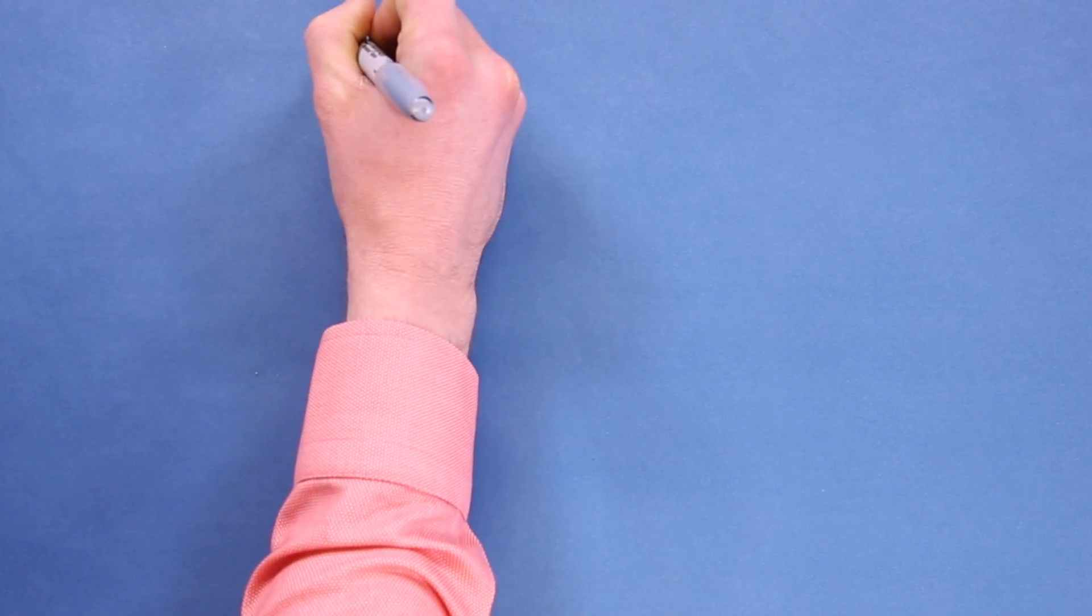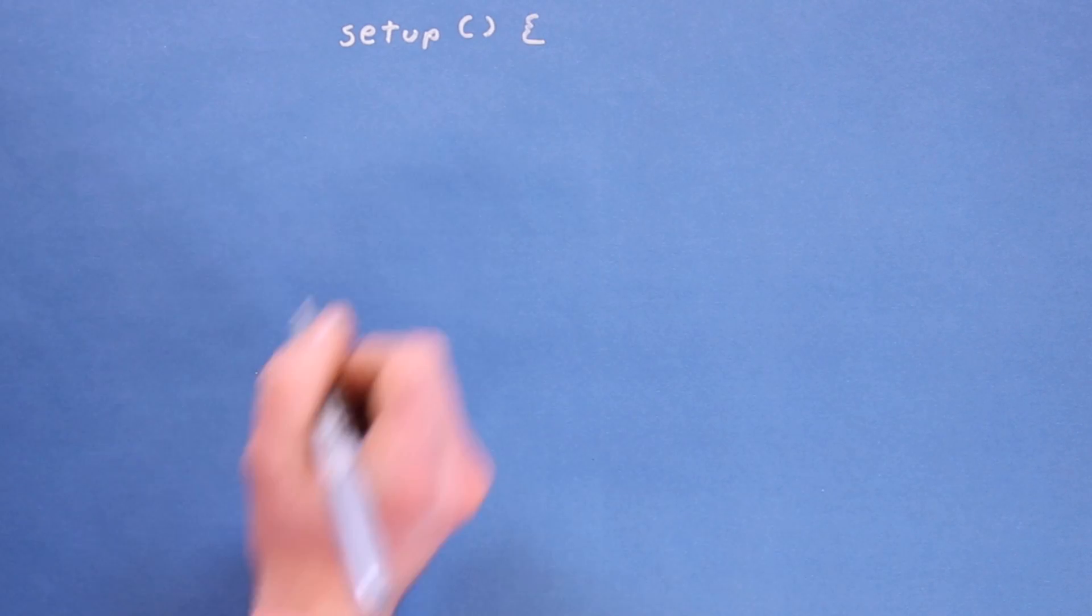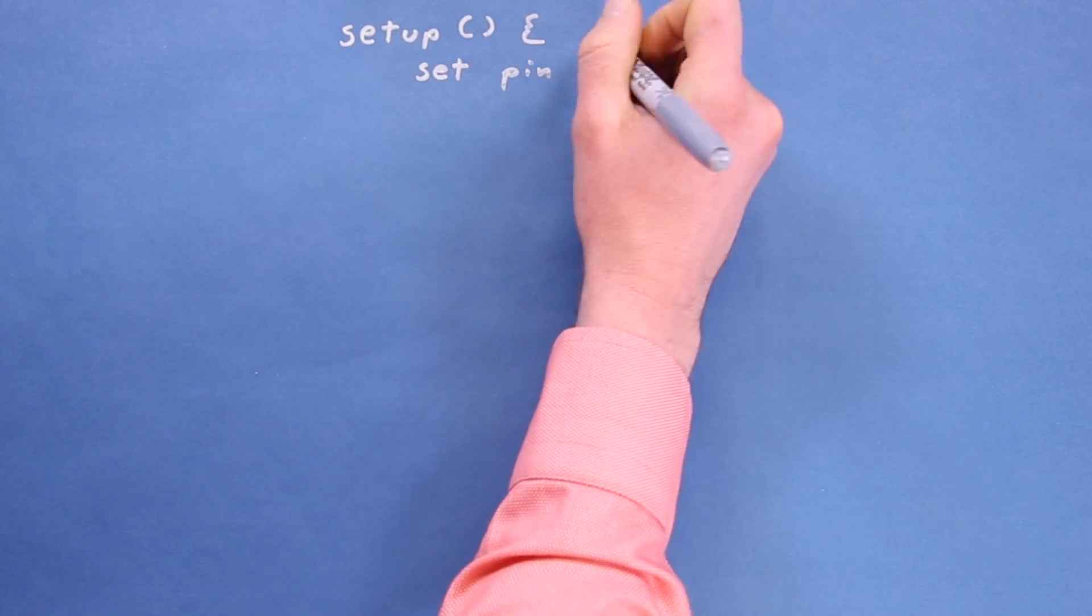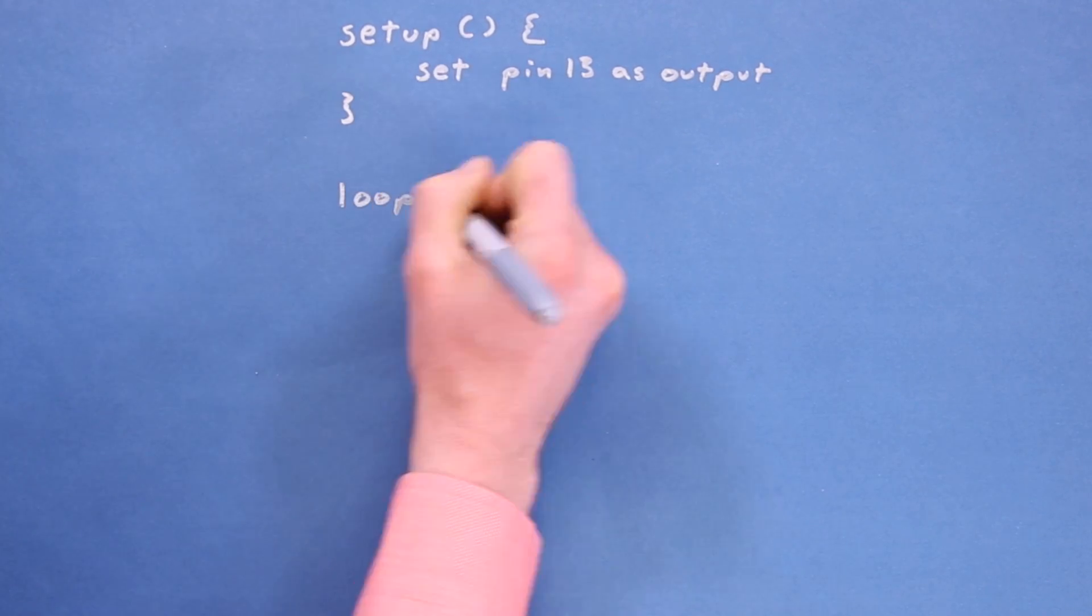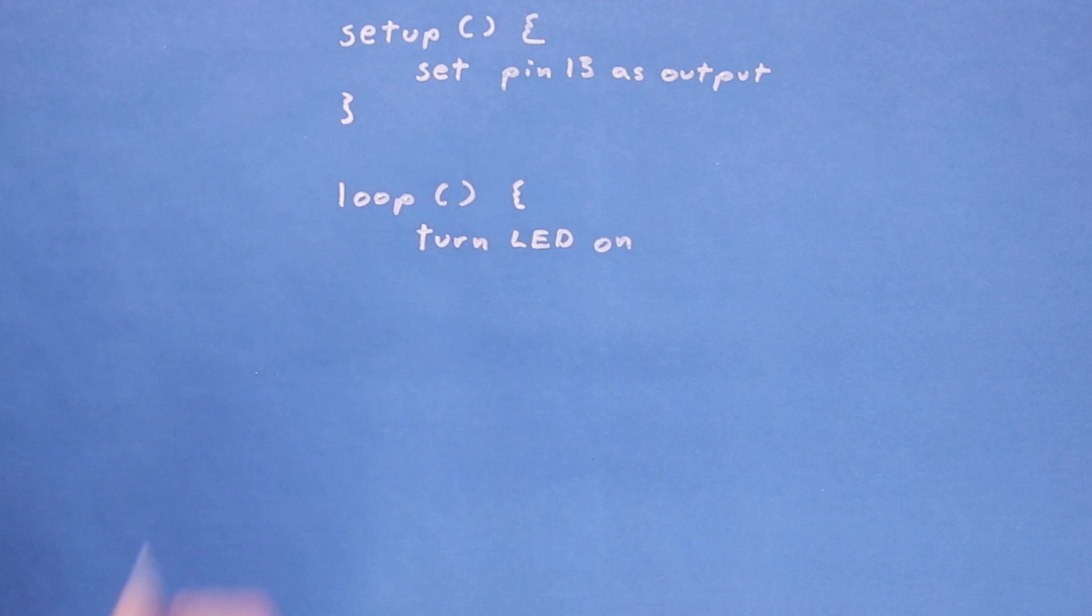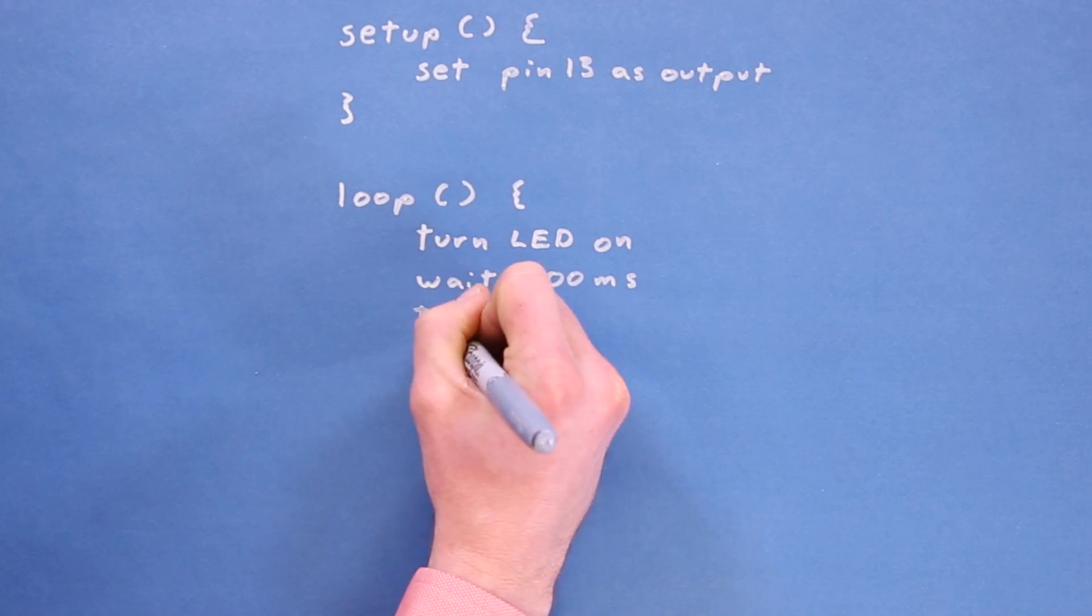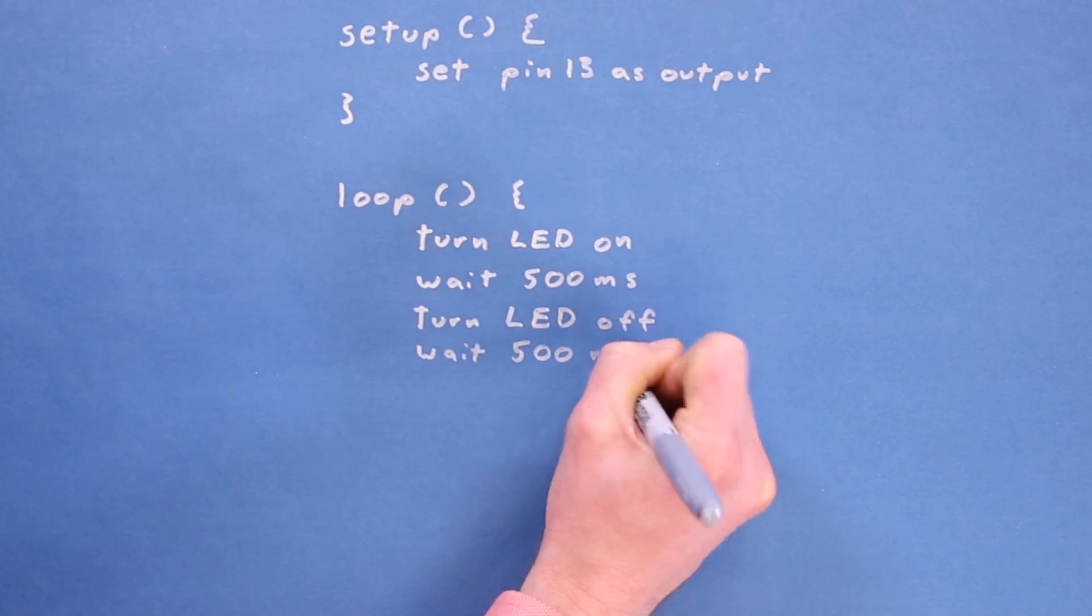Now is a good time to introduce pseudocode. It's not real code, but it's loosely related to our intended language, which is C and C++ in the Arduino environment. We replace real programming functions and terms with human language, English for me, to make it easier to understand. We don't have to worry about spelling and semicolons. It's just a way to outline what we want our program to do before actually writing code.